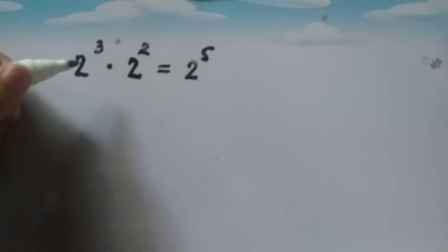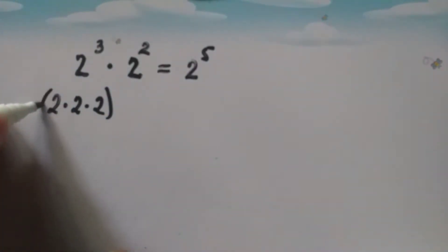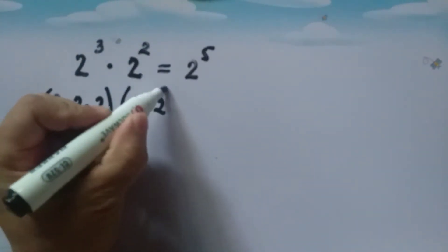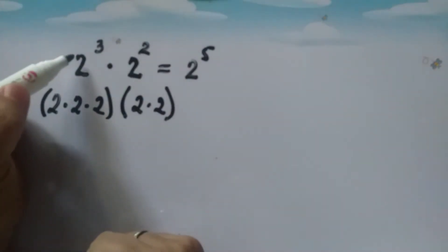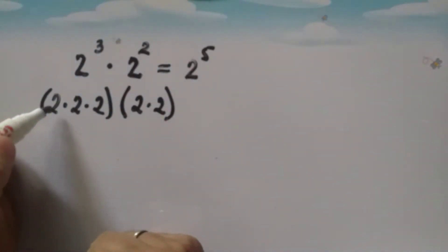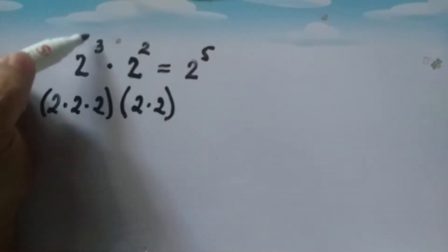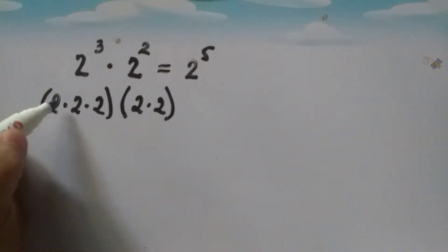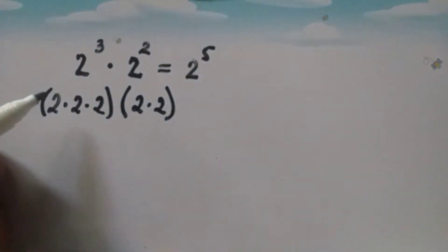When we say 2 cubed, this simply means 2 times 2 times 2. And 2 squared is 2 times 2. The base is the repeated factor in the product, and our exponent is 3. The exponent tells us how many times the base is used as a factor — this base, which is 2, is used 3 times. So 2 cubed is the same as 2 times 2 times 2.